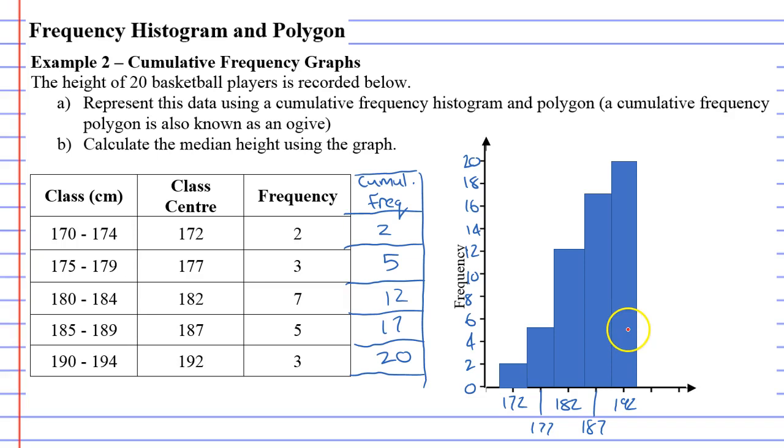Just like last time, there's no gaps between the bars. There is a half gap at the beginning. But when you do cumulative frequency graphs, you actually don't have to have the half gap at the beginning. And you'll soon see why when we do our cumulative frequency polygon.